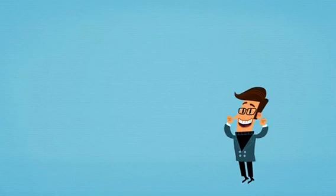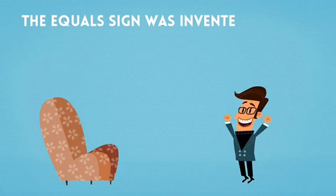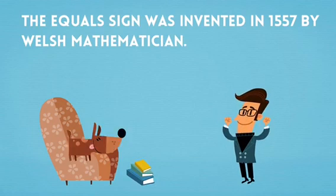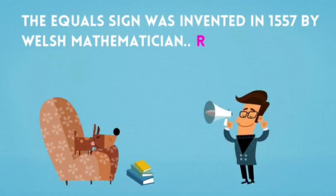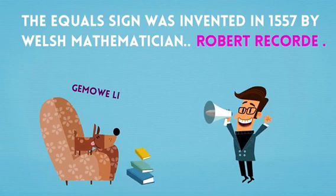The equal sign was invented in 1557 by a Welsh mathematician, Robert Record.